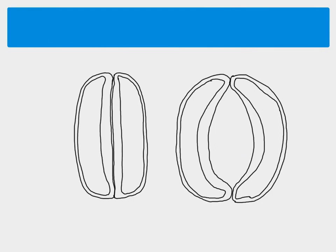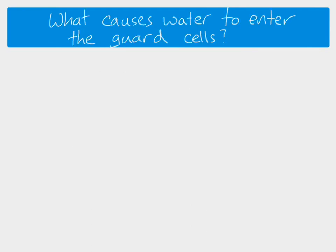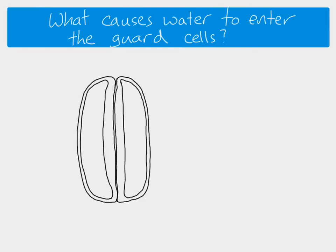So we know we need to get water in, and we know that when water goes in the guard cells change their shape and the stomata open. But how does water get in — what causes water to enter the guard cell? So here are our guard cells with the stomata closed, and the first thing that happens is hydrogen ions leave the cell. That happens because of a hydrogen ion pump — a proton pump — in the cell membrane of the guard cells. Because it's a pump, ATP is used, so hydrogen ions are pumped out of the cell. We're trying to achieve a lower water potential inside and a higher water potential outside, so that water moves into the cell.